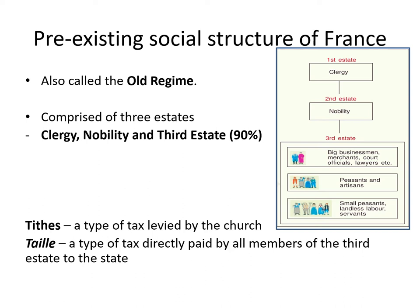The third estate also included a larger population of peasants, artisans, landless laborers, and servants. The first two estates — the clergy and the nobility — enjoyed certain privileges by birth. For example, the clergy collected tithes, a type of tax levied by the church, and the nobility enjoyed feudal privileges. Both states were exempted from paying taxes to the state. Meanwhile, about 60% of the land was owned by the nobles, the church, and other richer members of the third estate, although 90% of the total population were peasants.